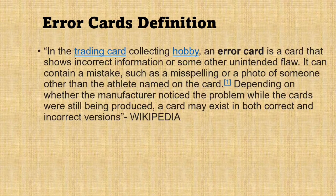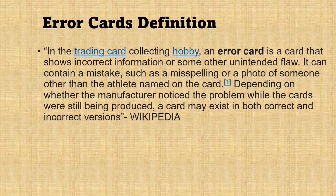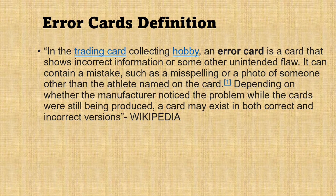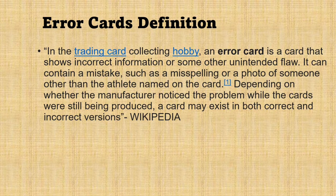If you go to Wikipedia, the trusted source of all information, it says: in the trading card collecting hobby, an error card is a card that shows incorrect information or some other unintended flaw. It can contain a mistake such as a misspelling or a photo of someone other than the athlete named on the card, among other things. Depending on whether the manufacturer noticed the problem while the card was still being produced, a card may exist in both correct and incorrect versions.